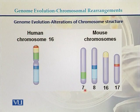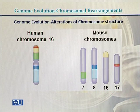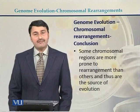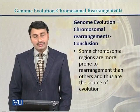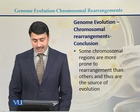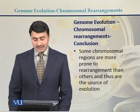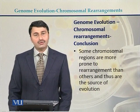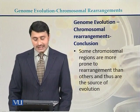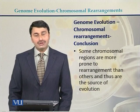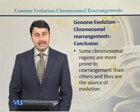So we can see that human chromosome 16 has emerged and evolved from four different chromosomes of the mouse — chromosomes 7, 8, 16, and 17. In conclusion, some chromosomal regions are more prone to rearrangements than others, and those regions are the source of evolution.